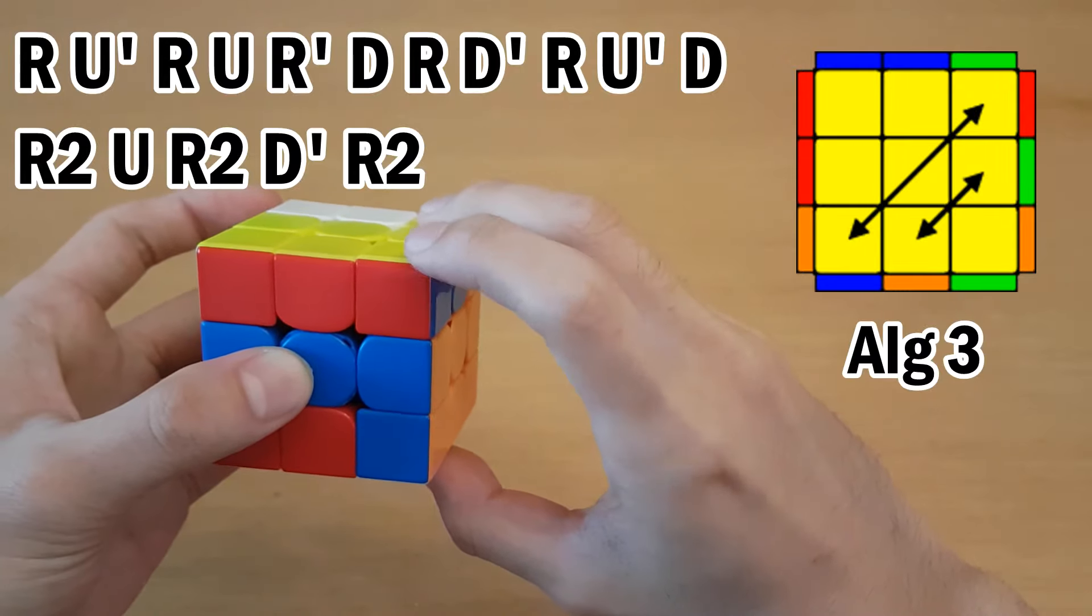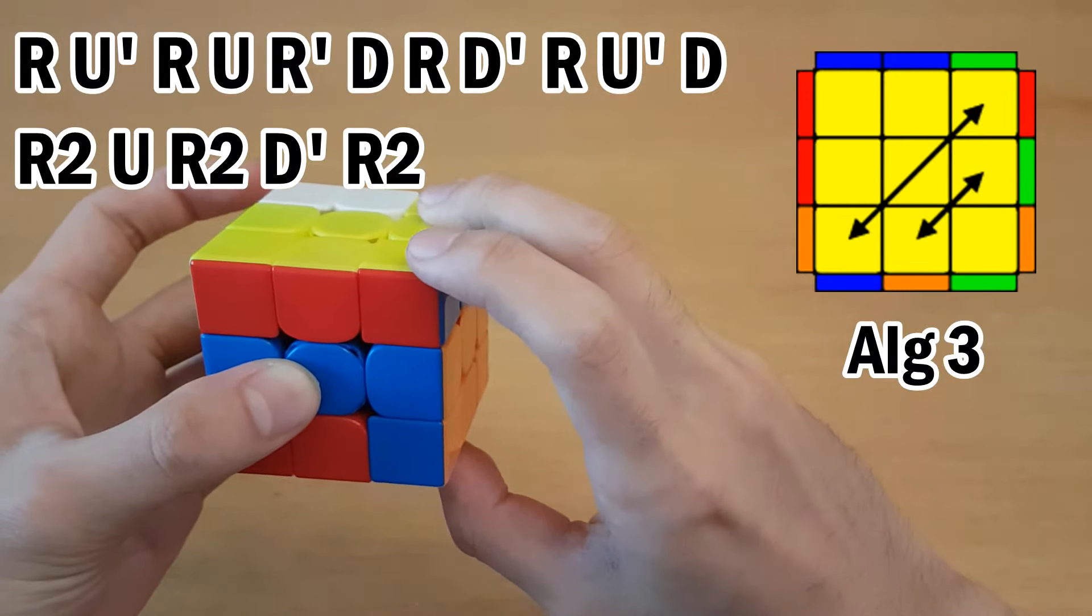Then here, after the R2, make sure you push along either with your index finger or your ring finger. I use my ring finger like this.